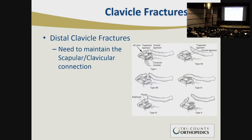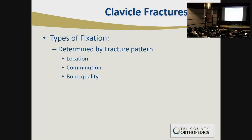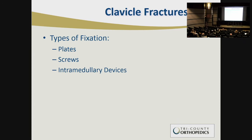For distal clavicle fracture fixation, indications differ slightly from mid-shaft — we essentially need to restore the strut of the scapular-clavicular connection through the acromioclavicular joint and coracoclavicular ligaments. The type of fixation is determined by fracture pattern, location, comminution, and bone quality. We can use plates, screws, or intramedullary devices.